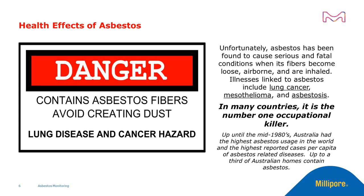Australia had the highest asbestos usage in the world up until the mid-1980s, and the highest reported cases per capita of asbestos-related diseases. Up to a third of Australian homes contain asbestos.